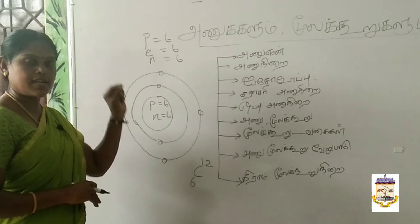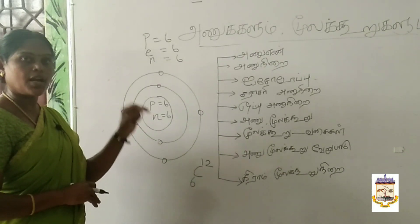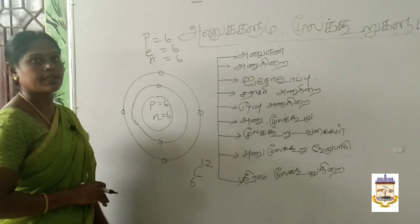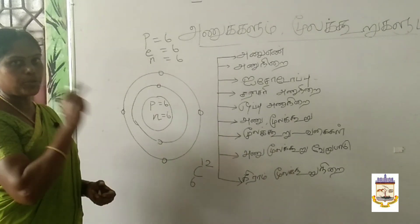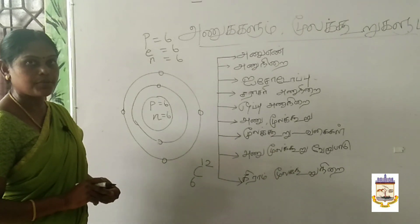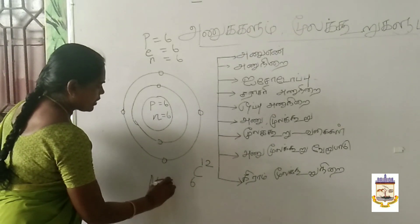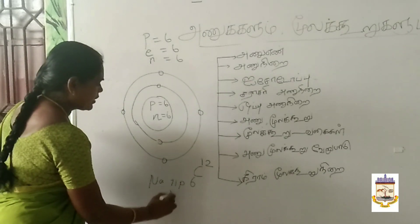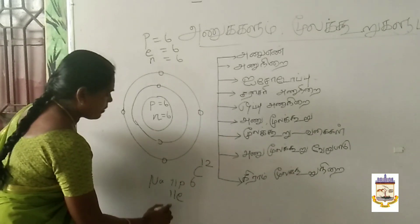Don't say proton-electron for atomic mass. For an atom, proton plus neutron must give atomic mass. Correct — there are 11 electrons. In sodium, there are 11 protons. How many electrons? There are 11 electrons. How many neutrons? There are 12 neutrons. This is sodium.